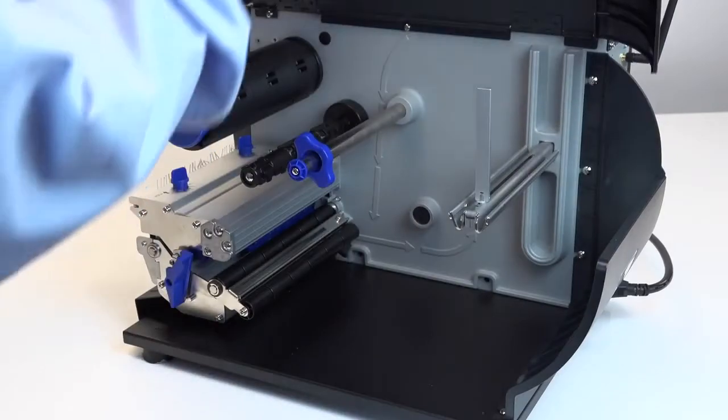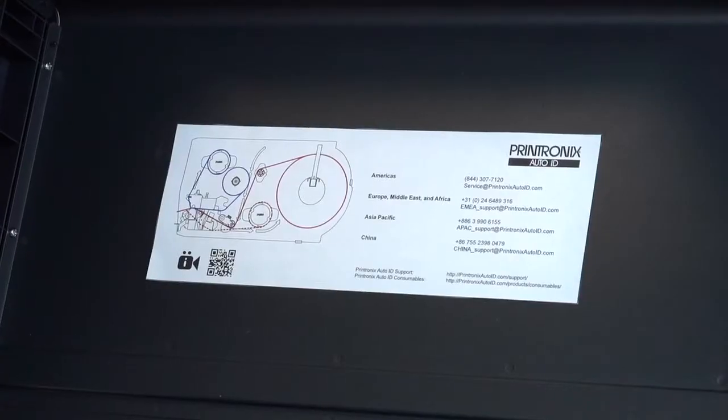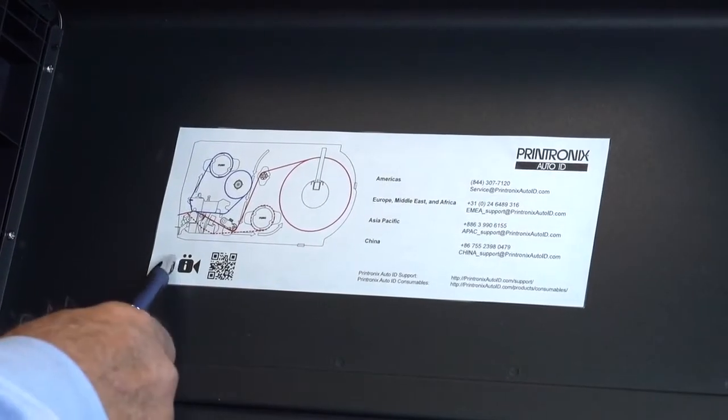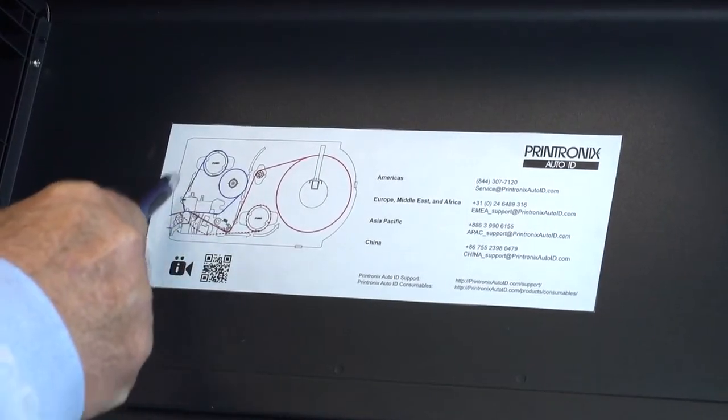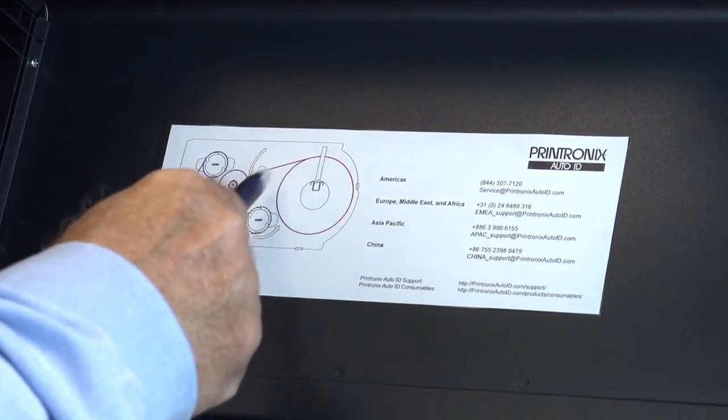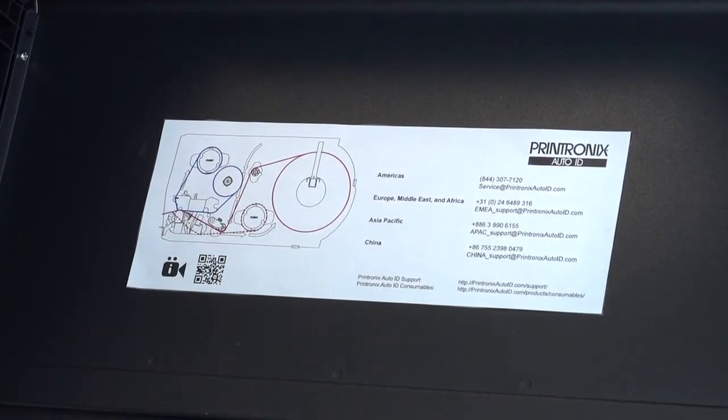First, open the media cover. Notice that there is a large label on the inside of the cover with color illustrations showing the ribbon path in blue and the media path in red. This illustration also shows the label liner path to the rewinder when a peel-off option is installed.